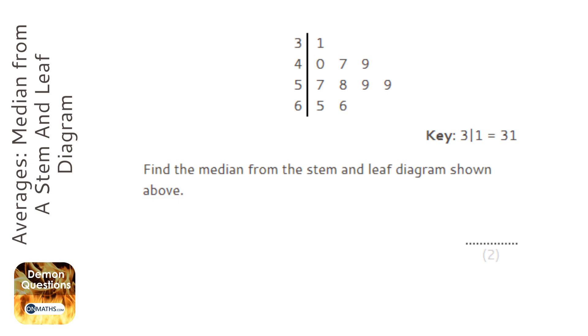There are two ways of doing this. There's find out how many numbers there are, add one to it, divide by two and find that number. But I'm going to just do the crossing out method.